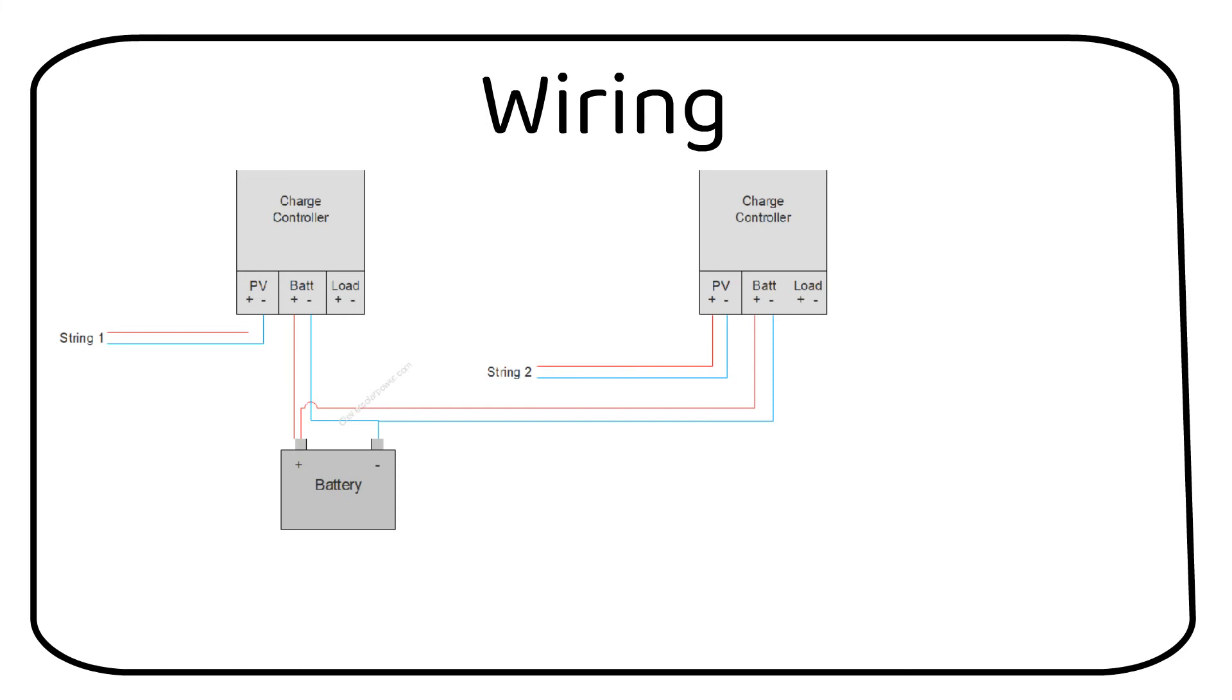As you can see in this example charge controller A will shut off a little bit earlier than charge controller B. This is because the wire length is a little longer, thus increasing the resistance. This is not a problem.